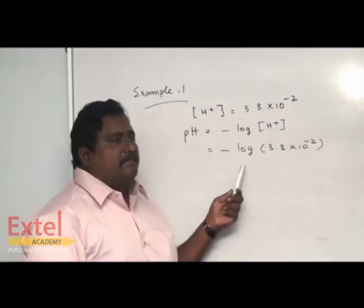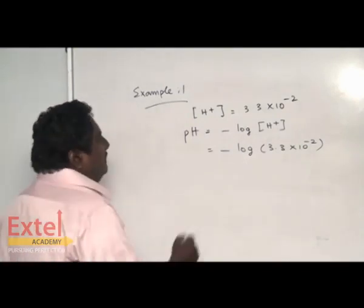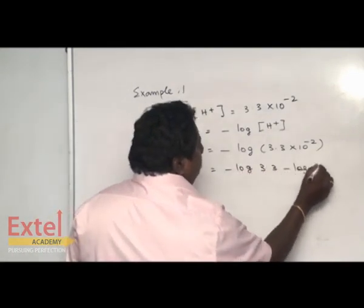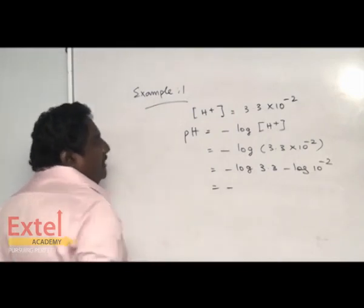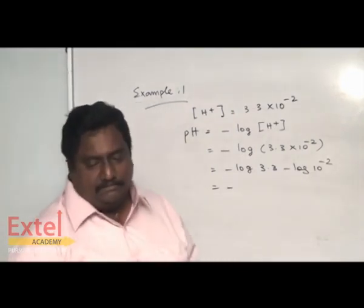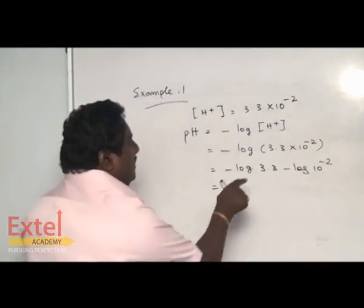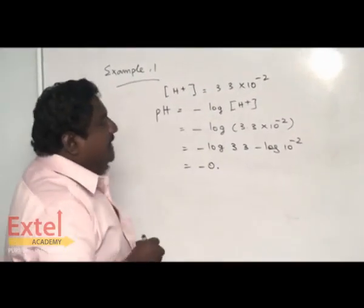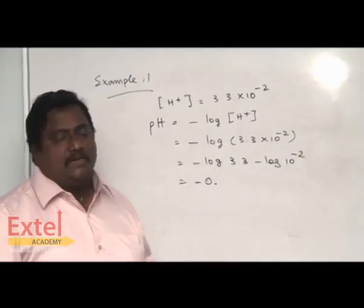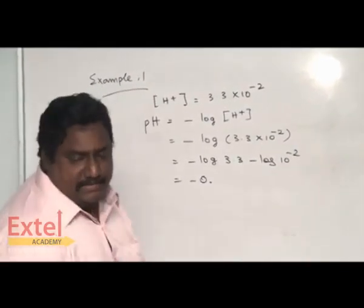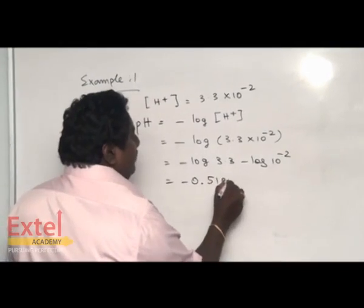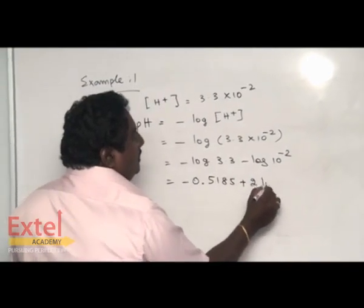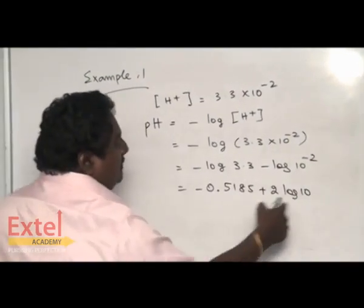This is in the form of log AB. You know that log AB is nothing but log A plus log B. The log 3.3 has to be found. Log 3.3, there is one number in front of the decimal, so 0 point. While looking at the log table, 33 against 0 has to be seen. 33 against 0 is 5185. Then the minus 2 will be in front. Minus plus 2 log 10. Log 10 value is 1.